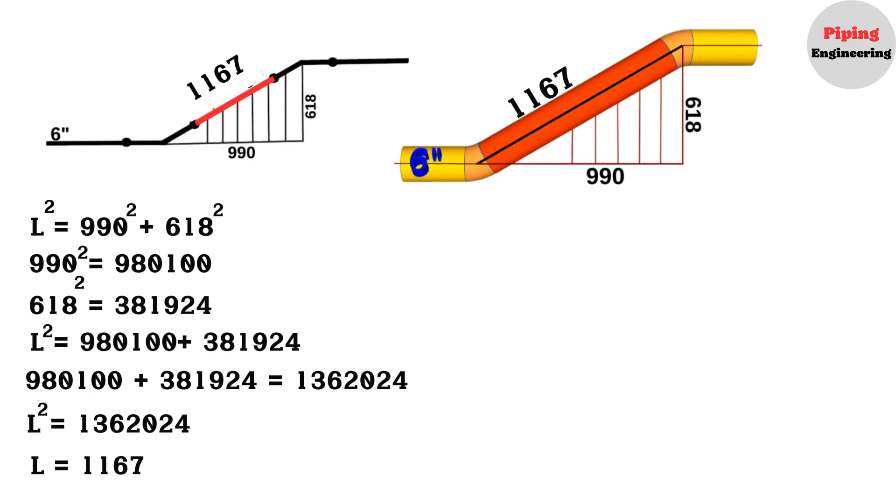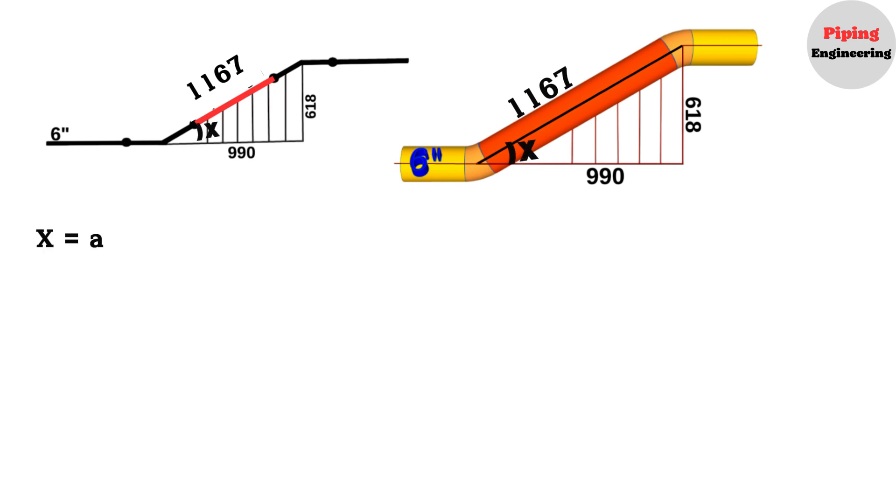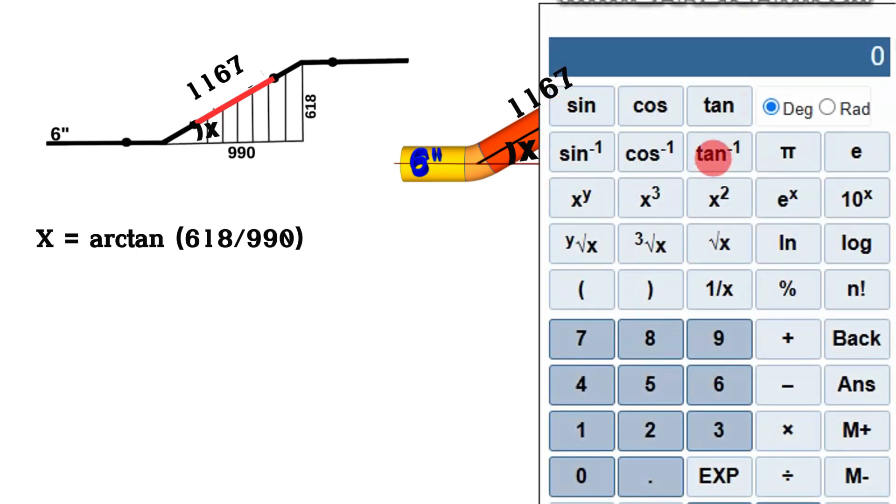Let's calculate the elbow degree for these dimensions on this pipeline. To find the elbow degree, we will use the trigonometric function. So, if we denote this angle as x, then x degrees will be equal to the arctangent of 618 divided by 990. Using a scientific calculator again, the arctangent of 618 divided by 990 will equal approximately 32 degrees.